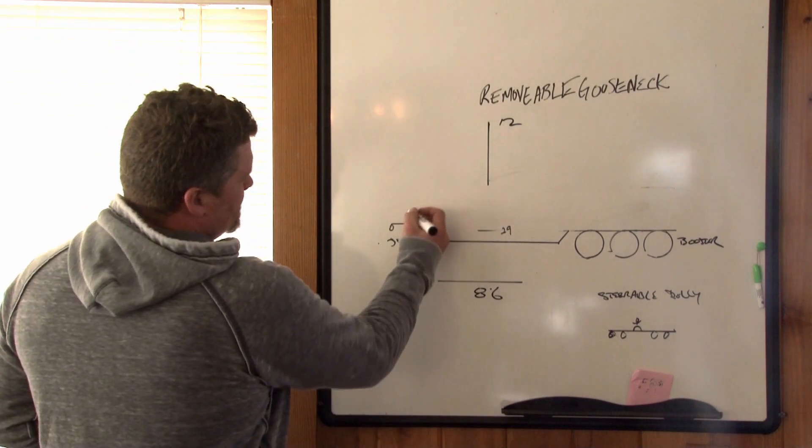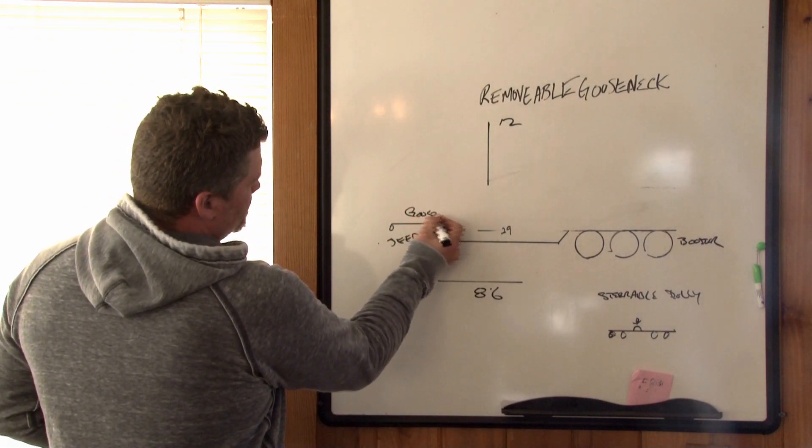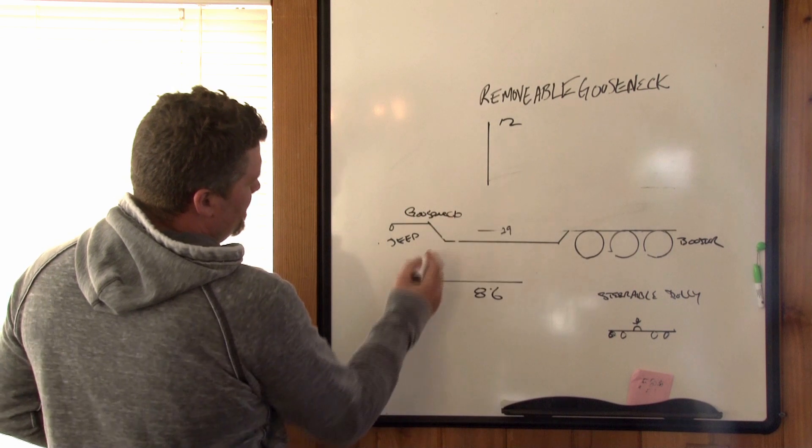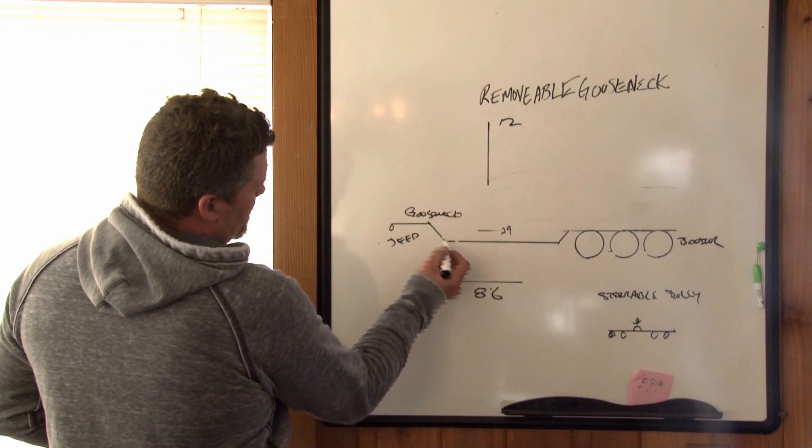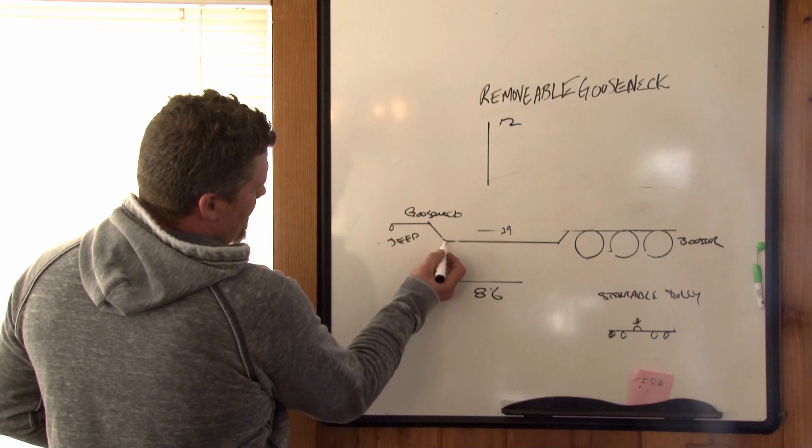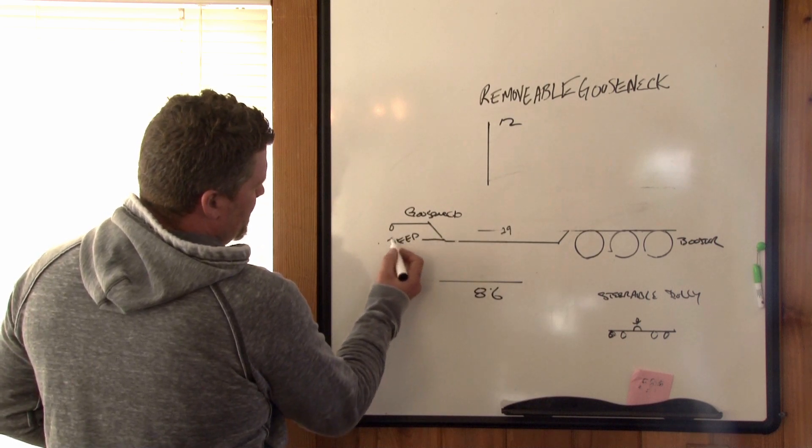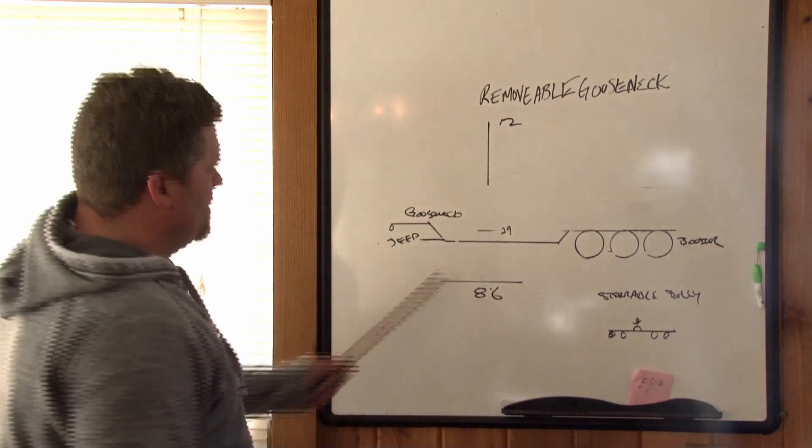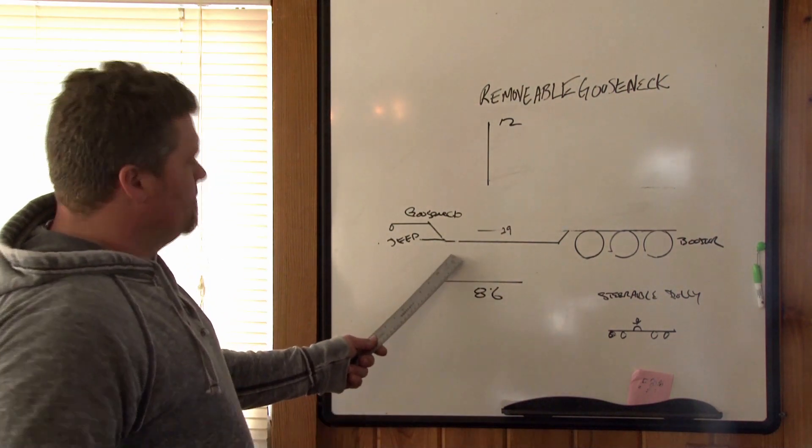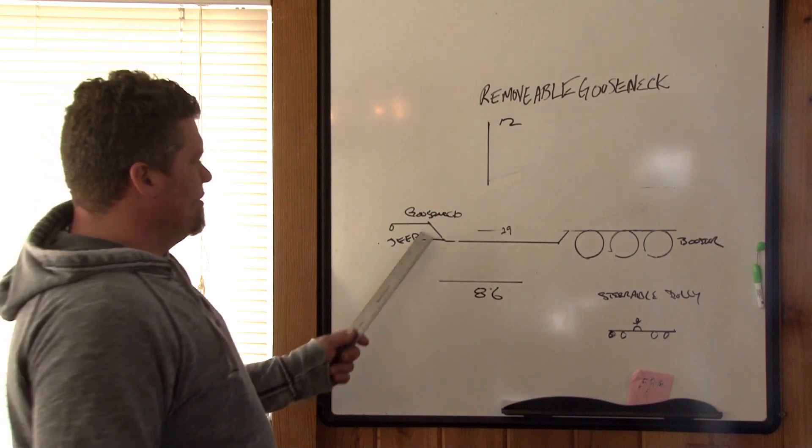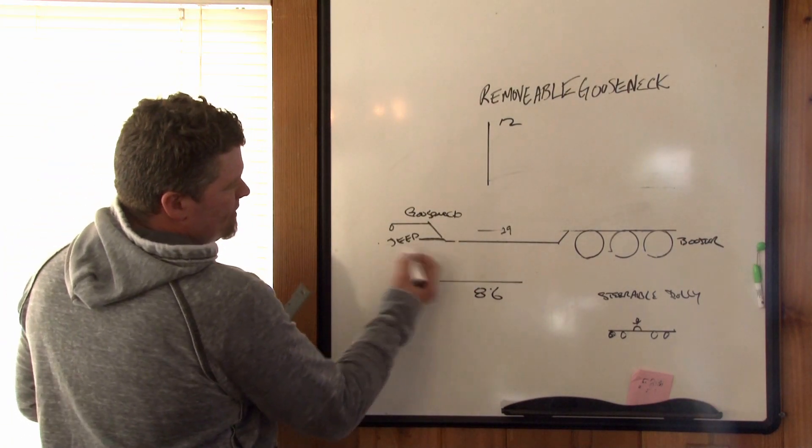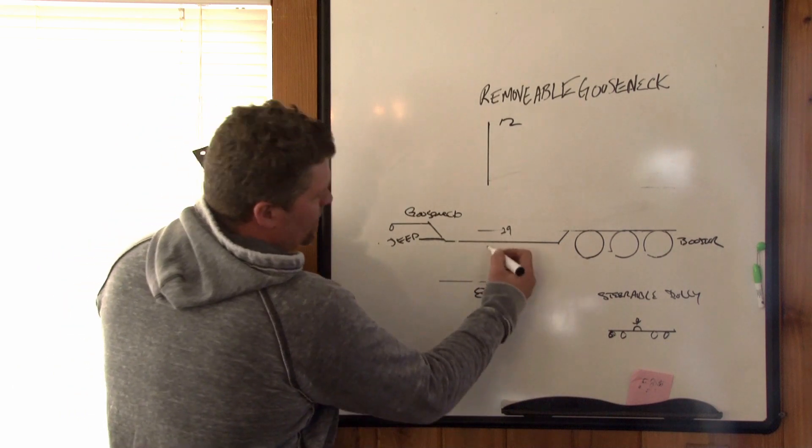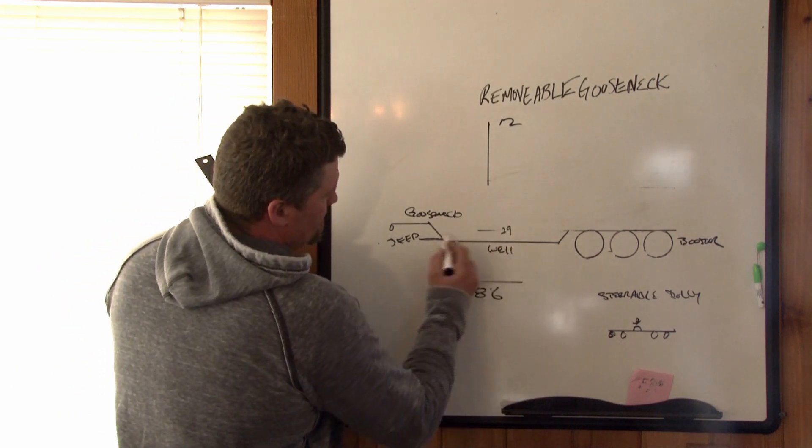In the front of your gooseneck here, you have a foldable front end which retracts down into a ramp. The truck pulls away from the trailer, he detaches from the trailer, pulls away, and then you're left with a ramp on the ground to drive your machinery up into the well, which they call the well.